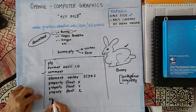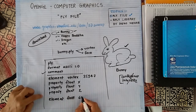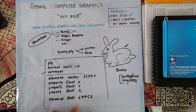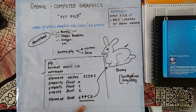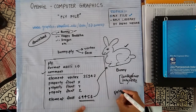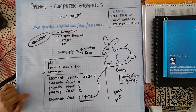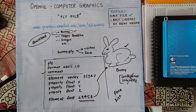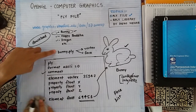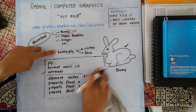The next element is element face, whose instance count is 69,451 — that means so many faces are going to make this bunny. As told in my previous video, a face is nothing but a list of vertices. When you observe very carefully in the bunny.ply file you will see examples of this.